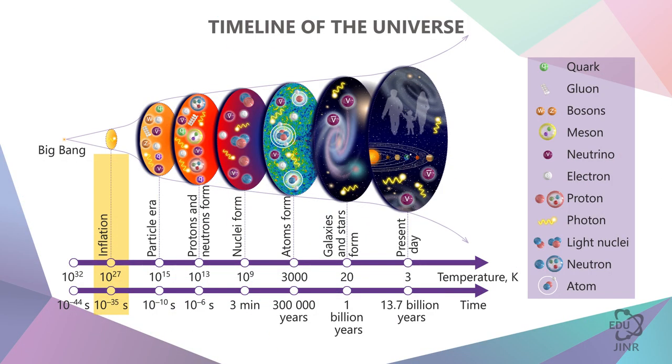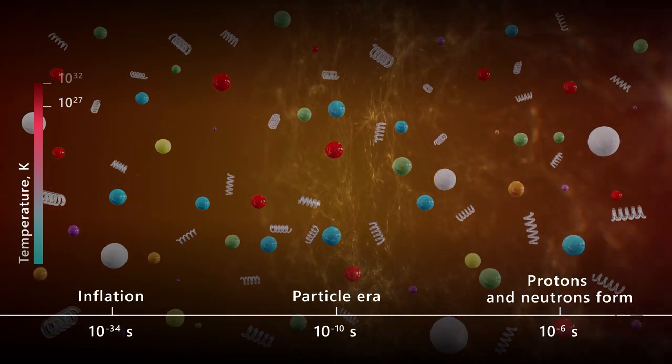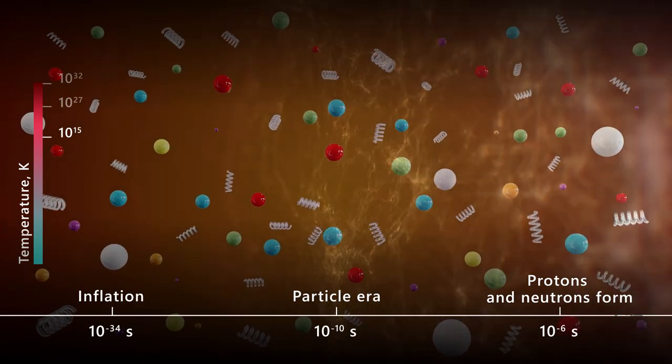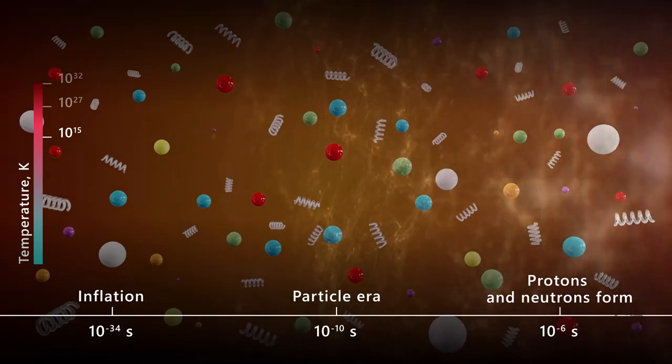So, arriving at 10 to the power of minus 35 seconds, we have very hot matter. We have plasma, which at this moment begins to form quarks, anti-quarks, and gluons. The temperature is 10 trillion degrees, but it drops very quickly.